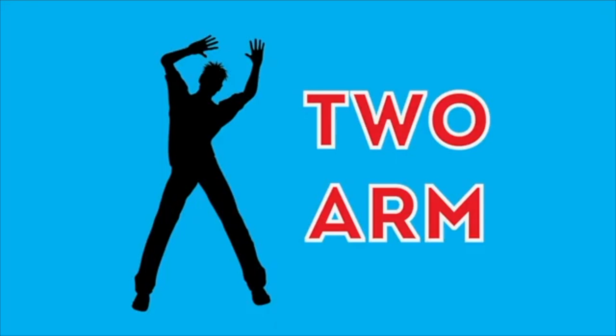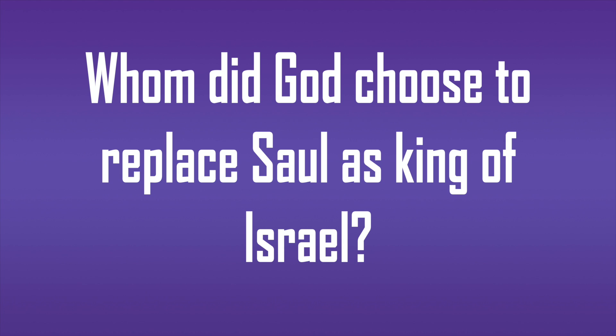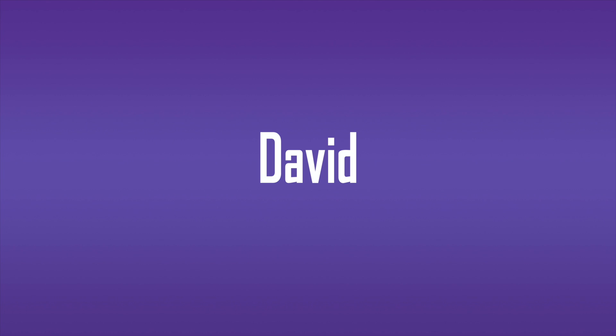Let's play again. Pick your pose. If you pick two arms, then you're the winner. Let's see if you can answer this JBQ question: Whom did God choose to replace Saul as king of Israel? If you answered David, then you're correct.